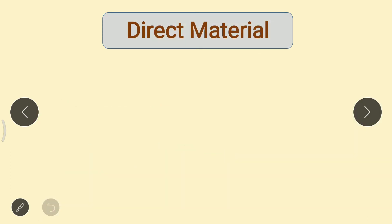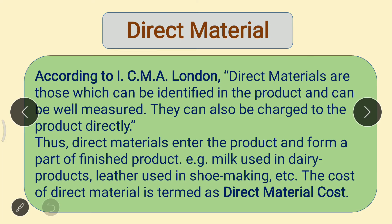First we will see direct materials. According to ICMA London, direct materials are those which can be identified in the product and can be well measured. They can also be charged to the product directly. Thus direct materials enter the product and form a part of the finished product. For example, milk used in dairy products, leather used in shoe making, etc. The cost of direct material is termed as direct material cost.